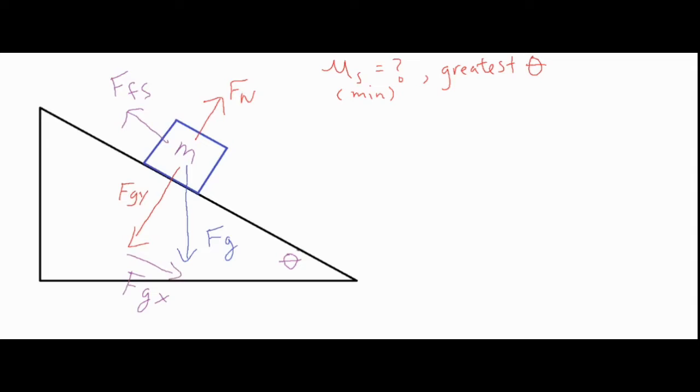So if we draw our sum of forces in each of the directions, our sum of forces in the y direction, or perpendicular, is basically Fn normal force minus that Fgy, and that's equal to zero newtons because there is no acceleration or movement in the perpendicular direction.